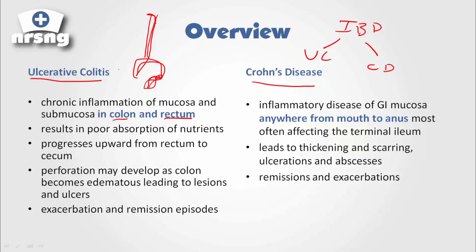The problem with ulcerative colitis is that it results in poor absorption of nutrients due to inflammation, and it can actually progress upward from the rectum all the way up to the cecum. Perforation can develop as the colon becomes edematous, and this leads to lesions and ulcers. It goes through exacerbations and remission episodes.